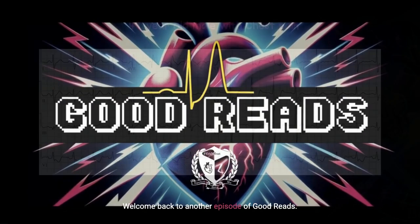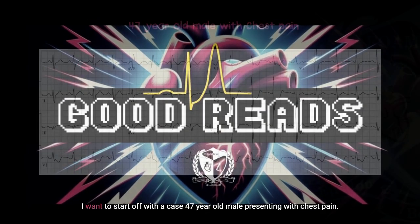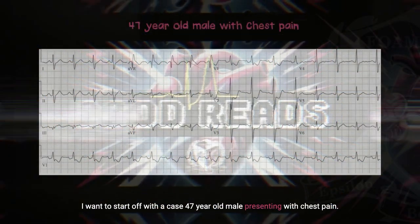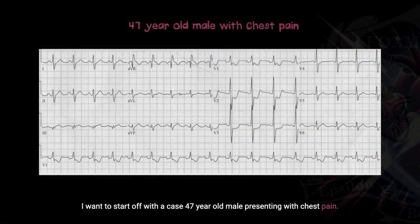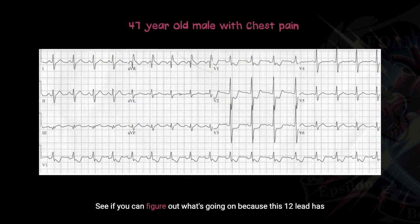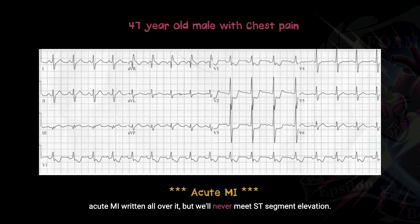Hey everybody, welcome back to another episode of Goodreads. I want to start off with a case — a 47-year-old male presenting with chest pain. I encourage you to hit your pause button, look at this 12-lead, and see if you can figure out what's going on, because this 12-lead has acute MI written all over it but will never meet ST-segment elevation criteria.